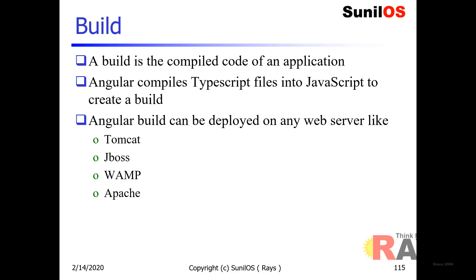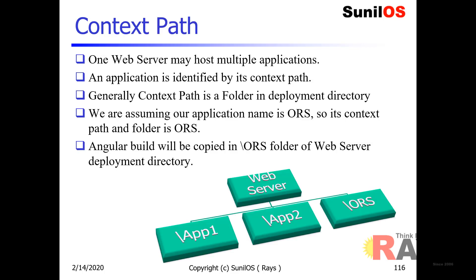You can deploy an Angular build on Tomcat server, JBoss server, WAMP server, or Apache server. One web server may host many web applications, and web applications are identified by their context path. Context paths are basically the folder name in the deployment directory of the web server.